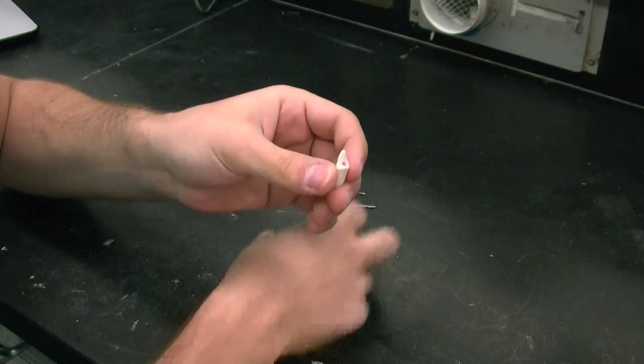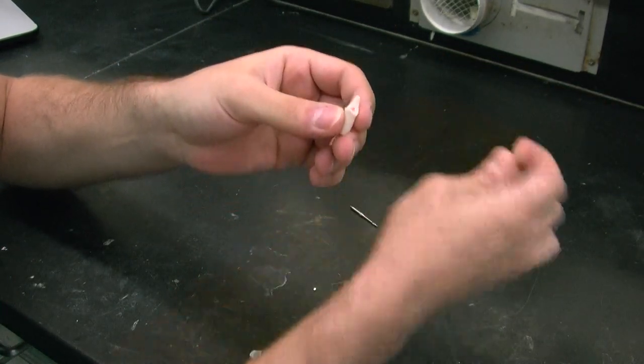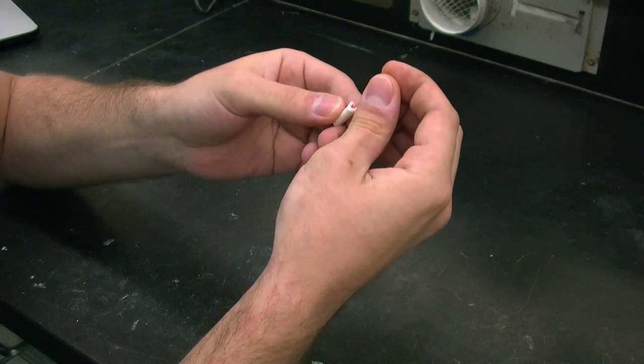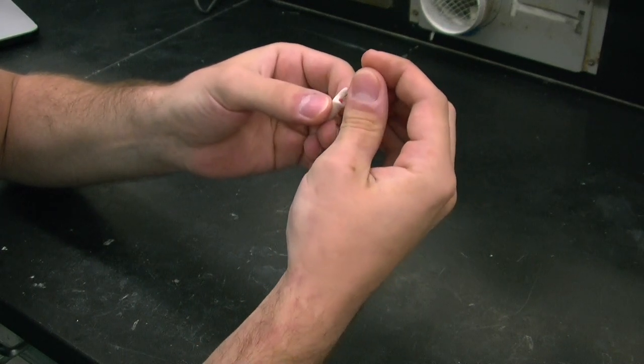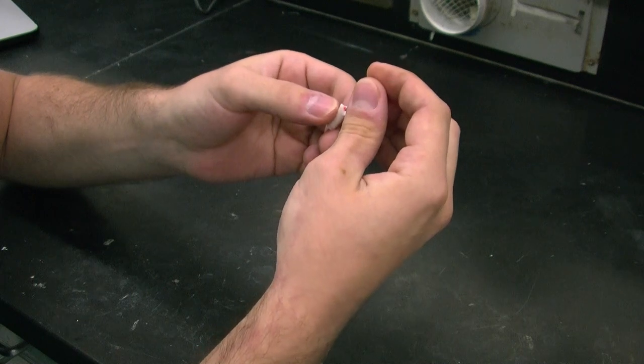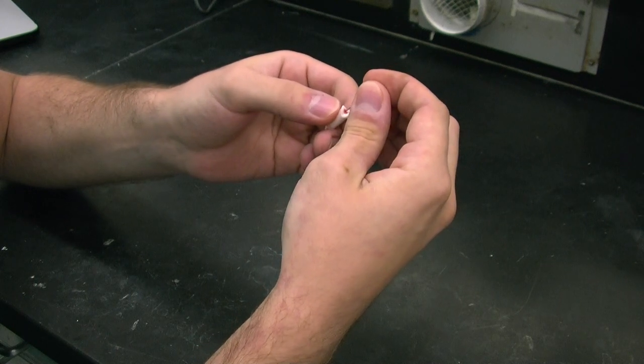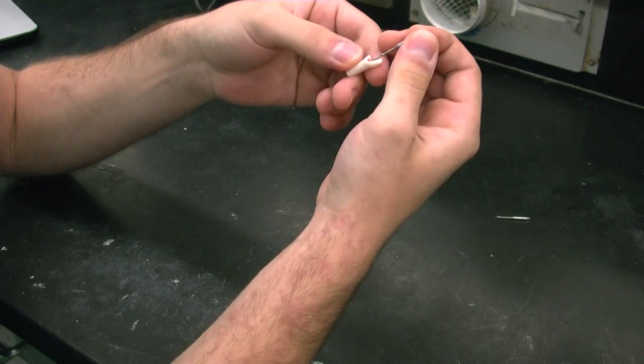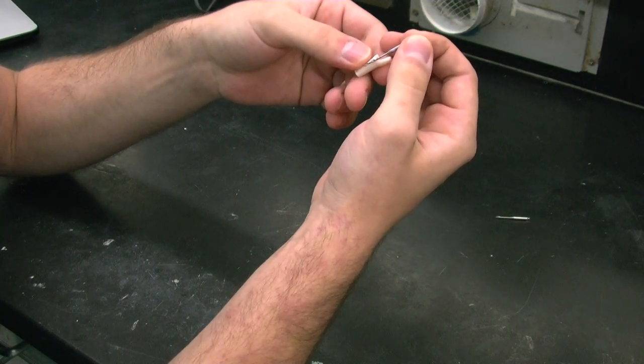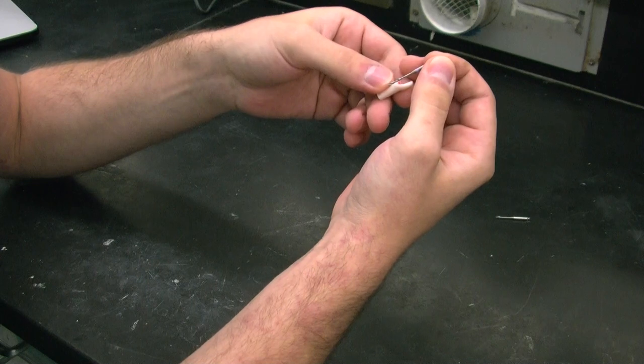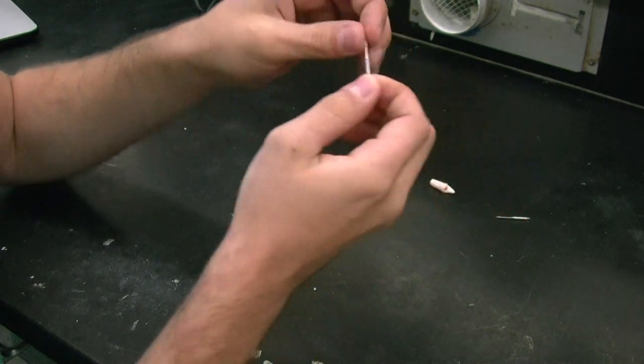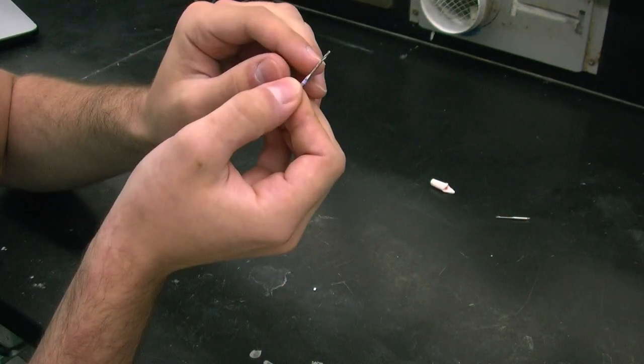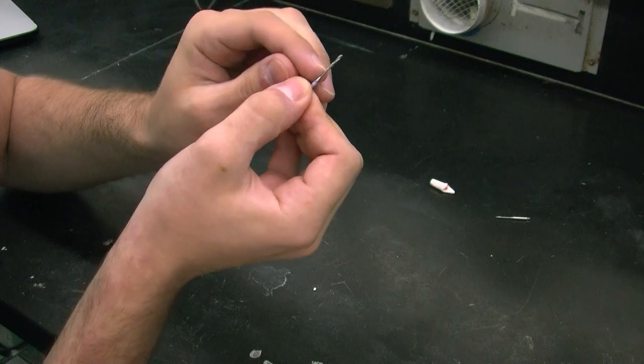First thing you're going to be doing is you can use your Gates Glidden to drill down into what used to be the pulp, which is now filled with gutta percha. Remove that, and then you'll use your post drill to drill down to a certain depth, which she will tell us later on. There's markings on the post drill at 7, 9, and 11 millimeters.